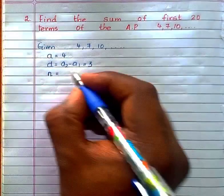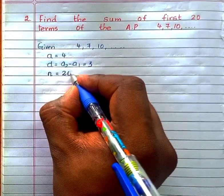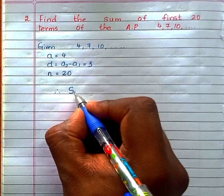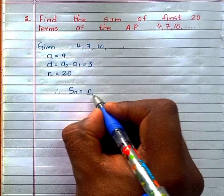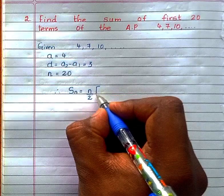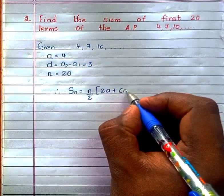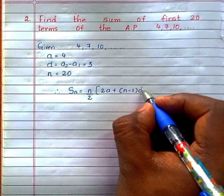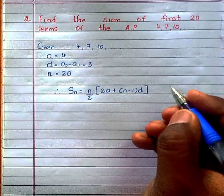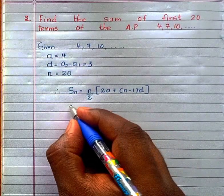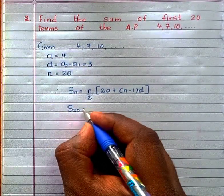We need to find out sum of first 20 terms, therefore n = 20. Now, the sum of n terms of an AP is given by the formula Sₙ = n/2 × [2a + (n-1)d].